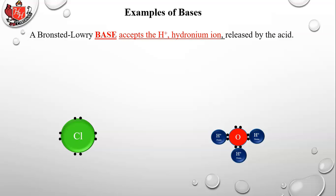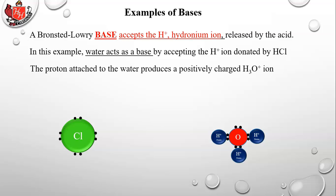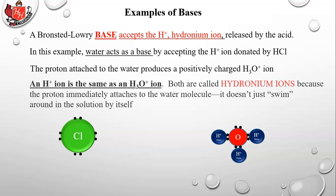A Brønsted-Lowry base accepts the H+ hydronium ion released by the acid. In this example, water acts as a base by accepting the H+ ion donated by HCl. HCl is an acid because it donates a proton — fitting both the Brønsted-Lowry and Arrhenius definitions. Water acts as a Brønsted-Lowry base by accepting the proton, producing a positively charged hydronium ion H3O+.